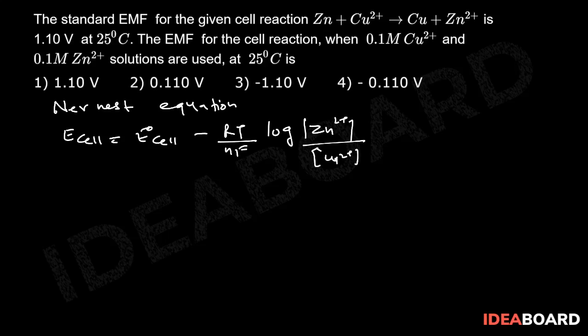Now you can write any half cell to find the value of n. Zinc becomes Zn²⁺ by losing 2 electrons, so n is the number of electrons exchanged and the value will be 2.